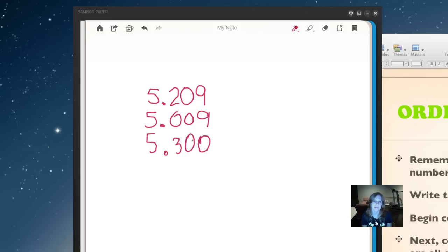That makes it easy to see that this is the greater number. This is the least number and this is the middle number. But remember, I also like to compare the numbers in the tenths place. The three is greater than the two or the zero. So it's my greatest number. The zero is obviously my least number and the two comes in the middle.